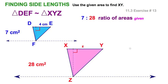This is what's given: we have a ratio of 7 to 28. Notice I don't say 7 centimeters squared to 28, because ratios are unitless. I can simplify that ratio, noting a common factor of 7, so the ratio of the areas is 1 to 4.